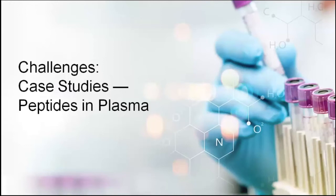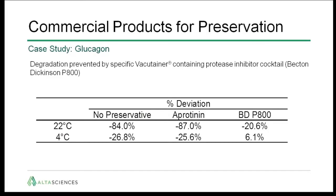Here are some case studies for peptides in plasma. There are commercially available products for the preservation of certain compounds. Here is a case study of glucagon: a vacutainer containing protease inhibitor cocktails, Becton Dickinson P800, is specifically designed to prevent degradation of glucagon. As shown in the table, at room temperature, without preservatives or even with the addition of aprotinin — another protease inhibitor — the degradation of glucagon is significant. However, using the BD P800, there is a significant decrease in degradation, meaning an increase in stability of glucagon. Nevertheless, in order to get within the acceptance criteria, all sample handling for glucagon will still have to be done at 4 degrees Celsius.